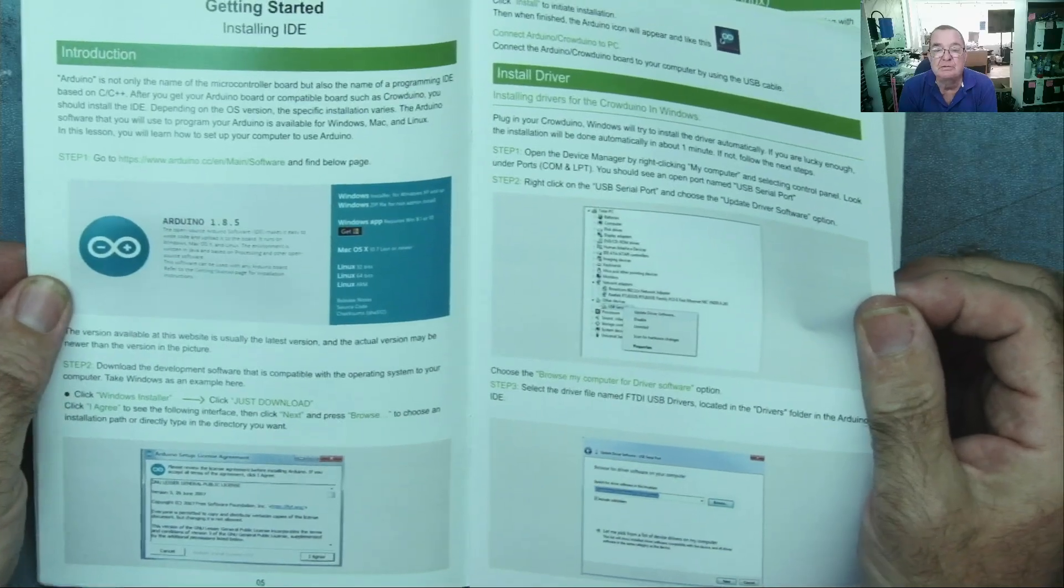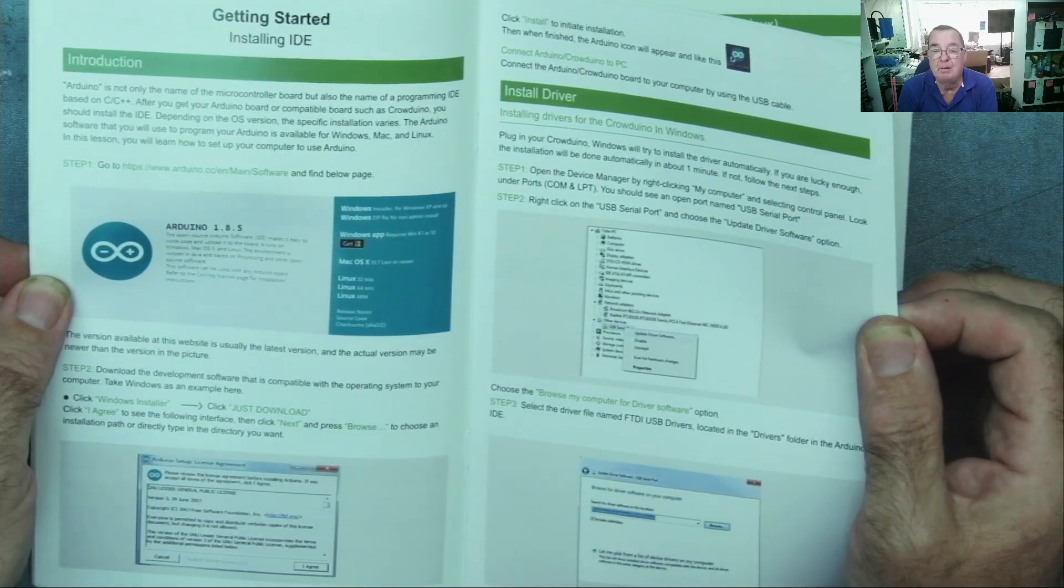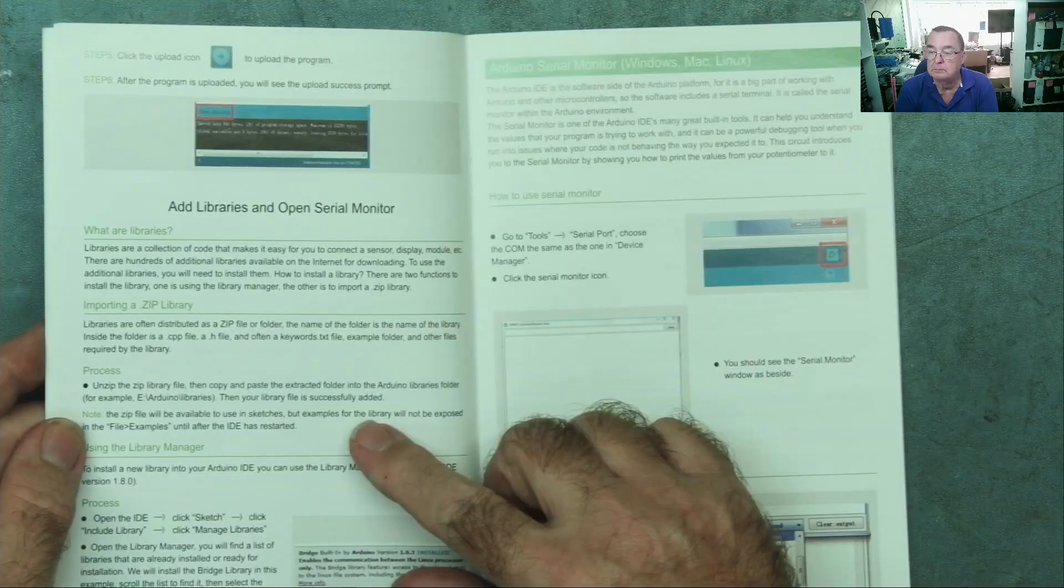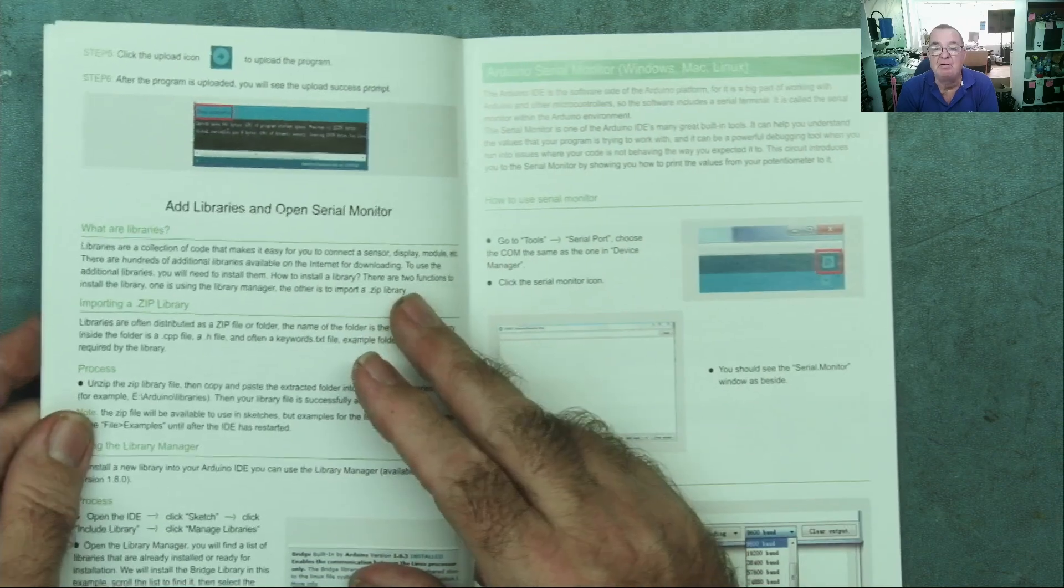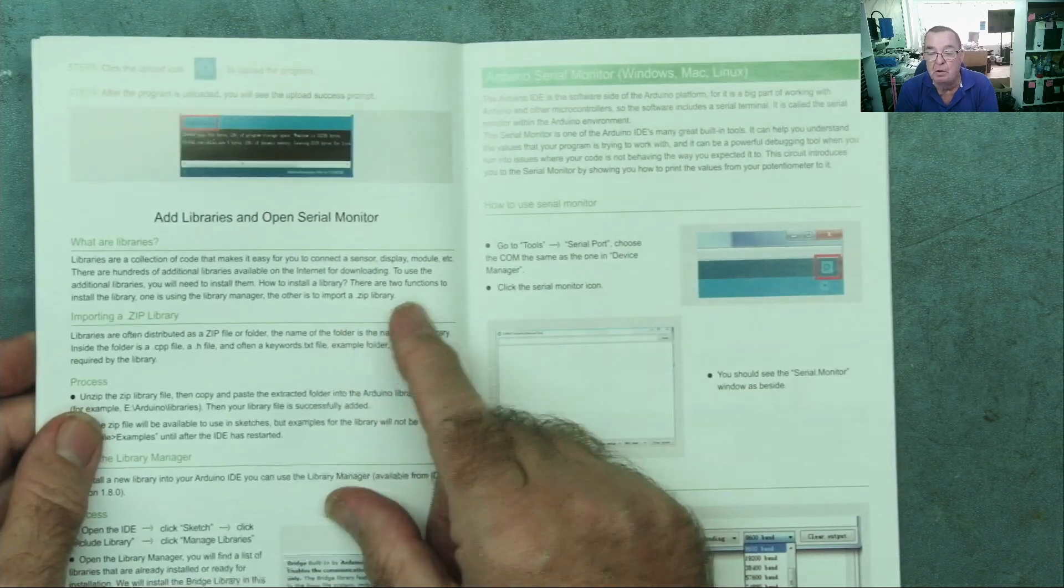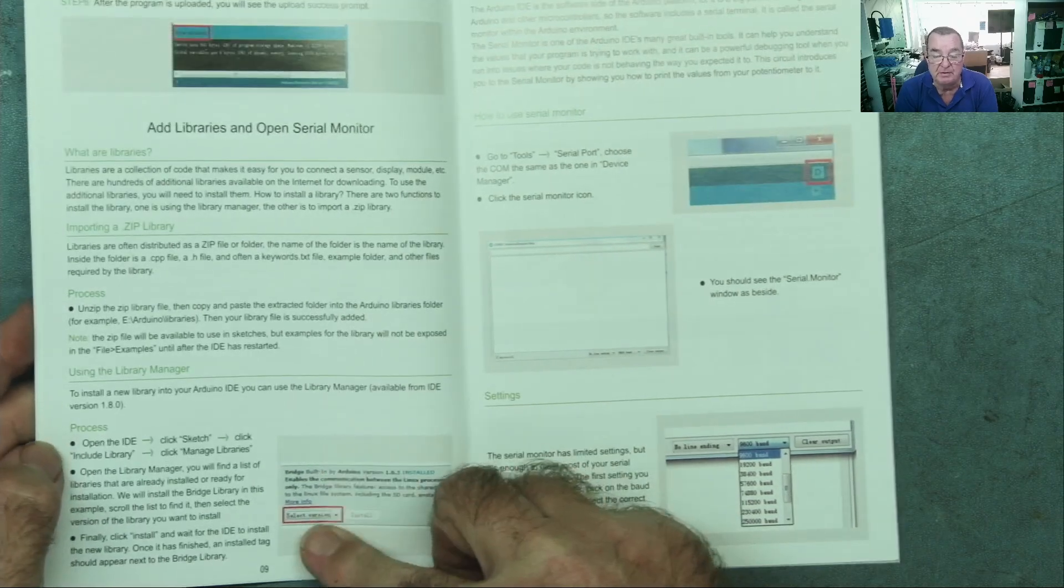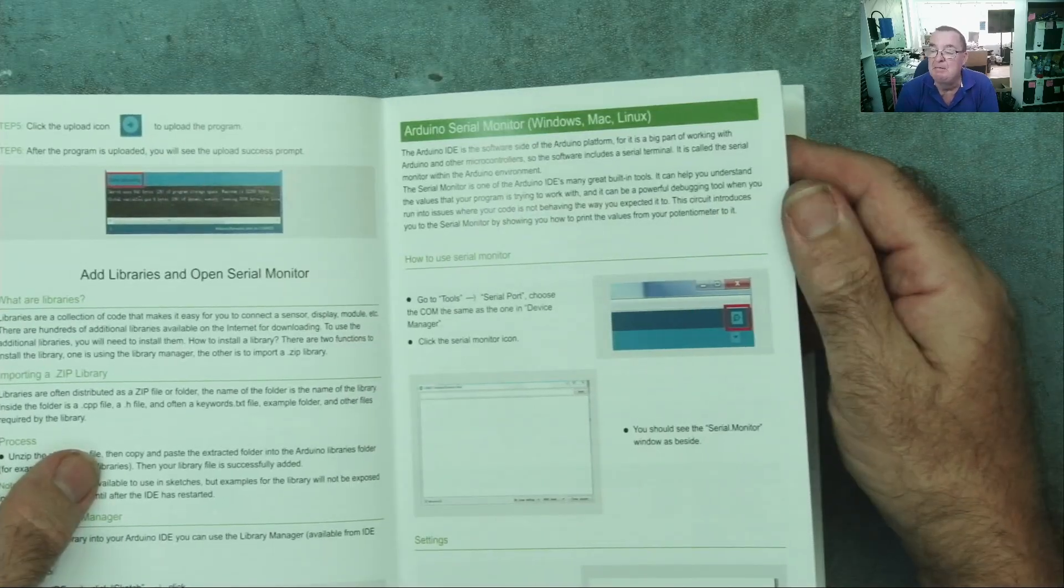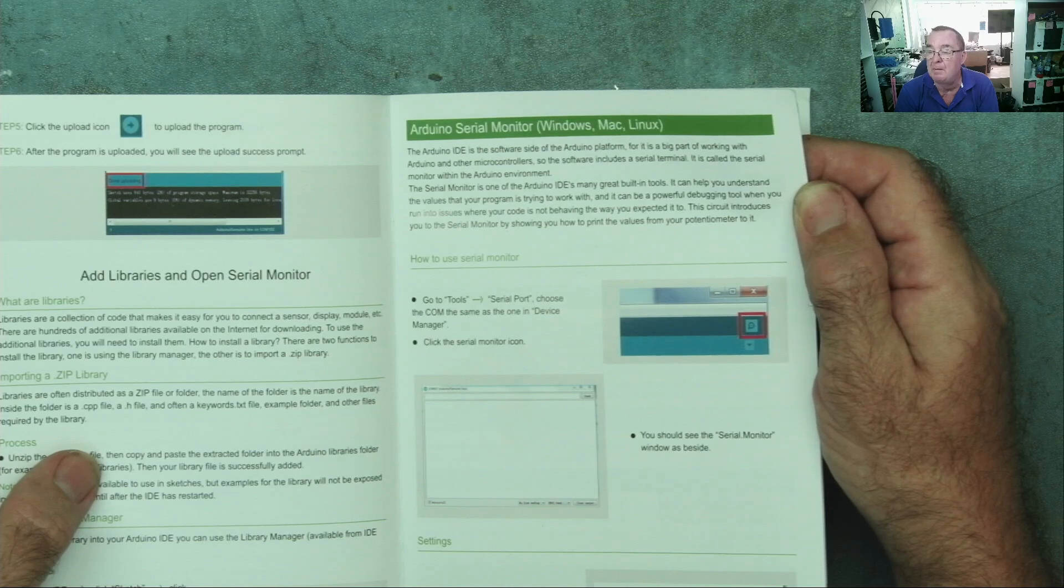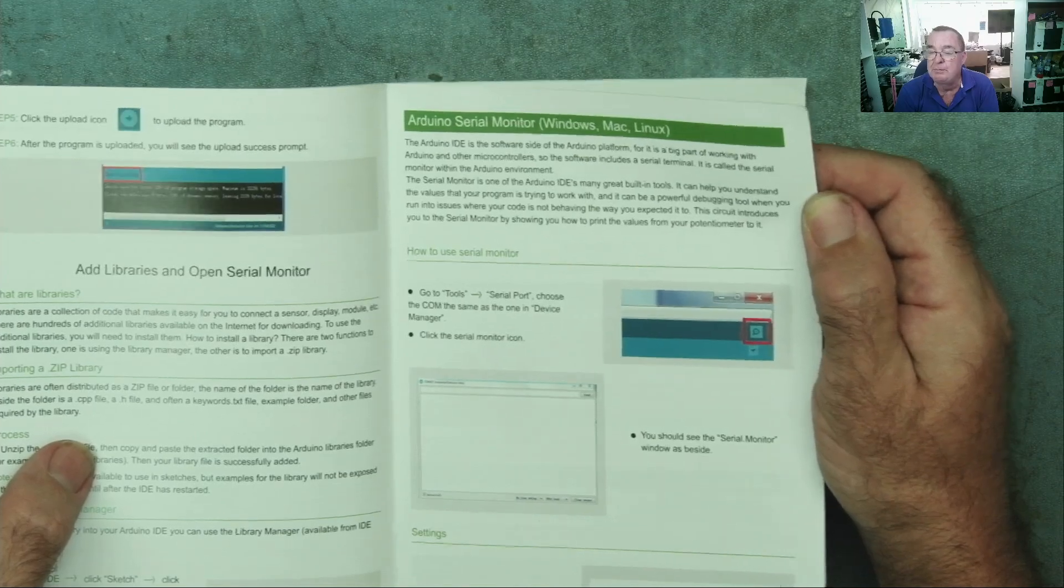Arduino is not only the name of the microcontroller board but the name of the programming IDE based on C/C++. It tells us about installing the program, adding libraries. It tells us what libraries actually are. It explains how to actually use a library manager to find the libraries you want and about the serial monitor. This is what you use to monitor your software basically, it's a debugging tool so you can see what your software is actually doing on your computer screen.